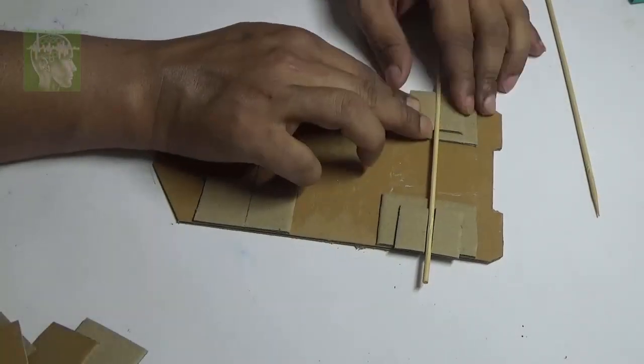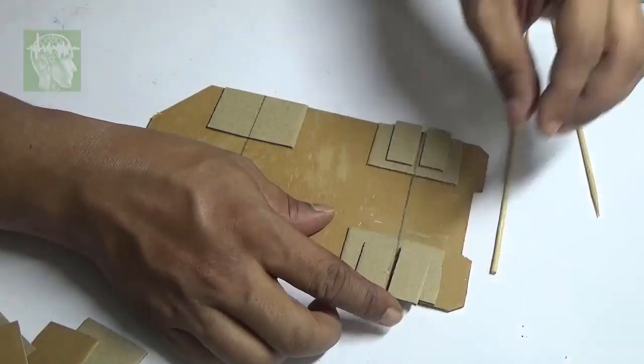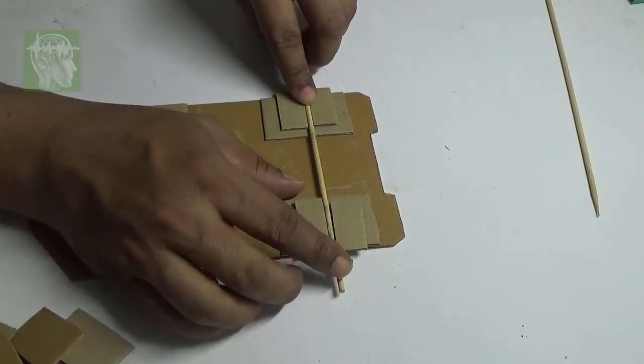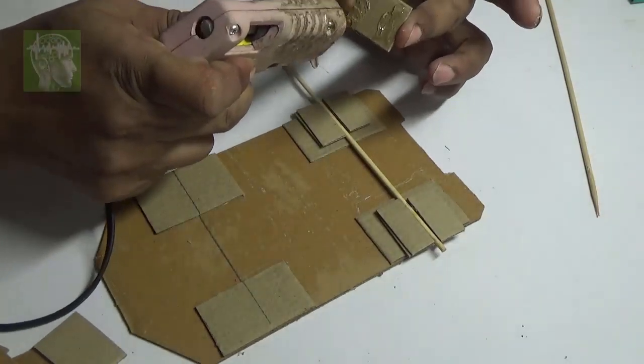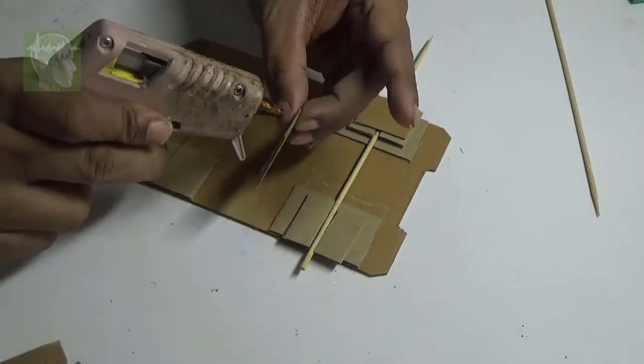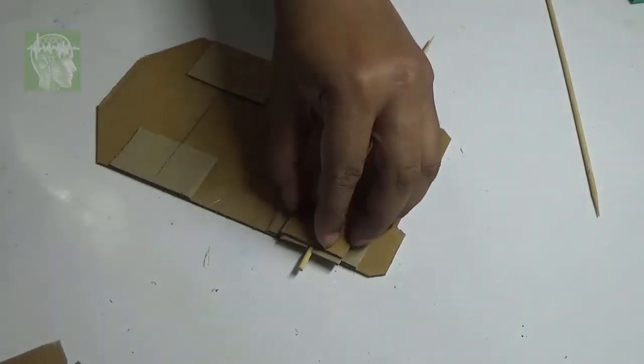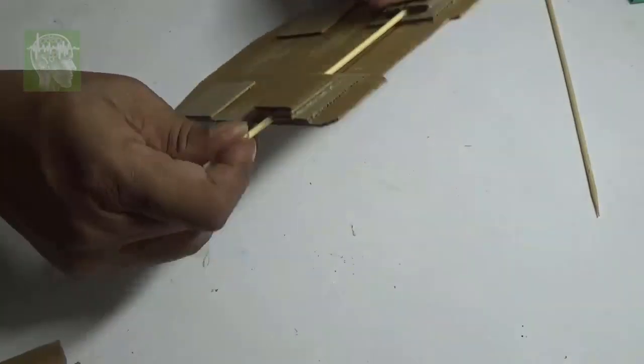I'm going to use four pieces on each side. Now top cover with another bigger cardboard piece. Make sure the shaft can move freely. Insert the shaft like this. It should rotate smoothly.